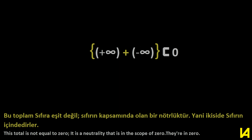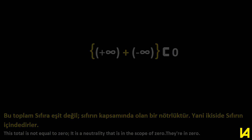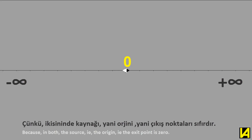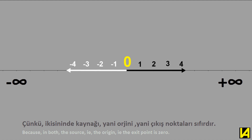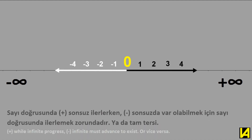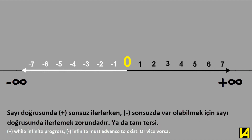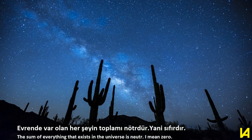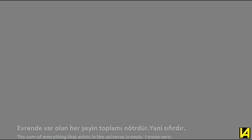From this point of view, the sum of plus infinity and negative infinity is not a number — it is neuter. This total is not equal to zero; it is a neutrality that is within the scope of zero. Because in both cases the source, the origin, the exit point is zero. Plus infinite progress and negative infinite progress must both advance to exist. The sum of everything that exists in the universe is neuter by means of zero.